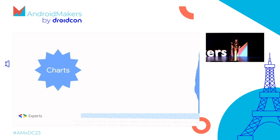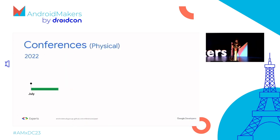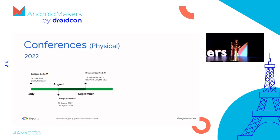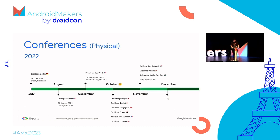Starting with all conferences from last year: in July we had DroidCon Berlin and Chicago Roboto, DroidCon New York in September. October was heavy. February is always the busiest month for conferences — I'm always running around. I'm kind of really disappointed that I only went to two of these. We also had the Android Dev Summit, DroidCon Kenya, the Advanced Kotlin Days and GDD DevFest. December was Christmas. October and November are actually the most productive months.